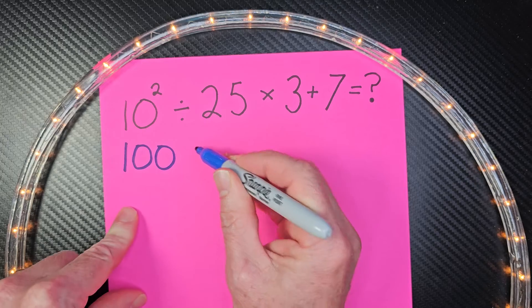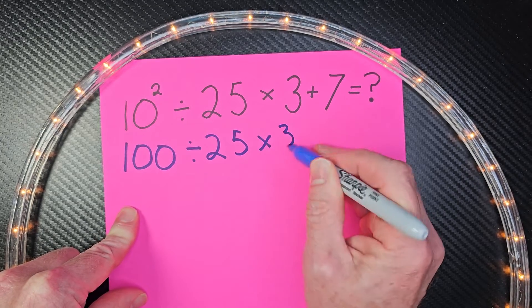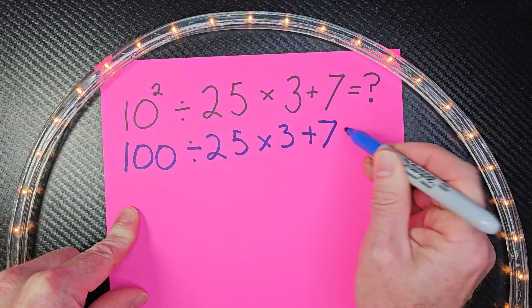Now I'm going to rewrite this whole problem out: 100 divided by 25 times 3 plus 7.